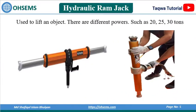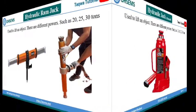Hydraulic ram jack is used to lift an object. There are different power ratings, such as 20, 25, and 30 tons.